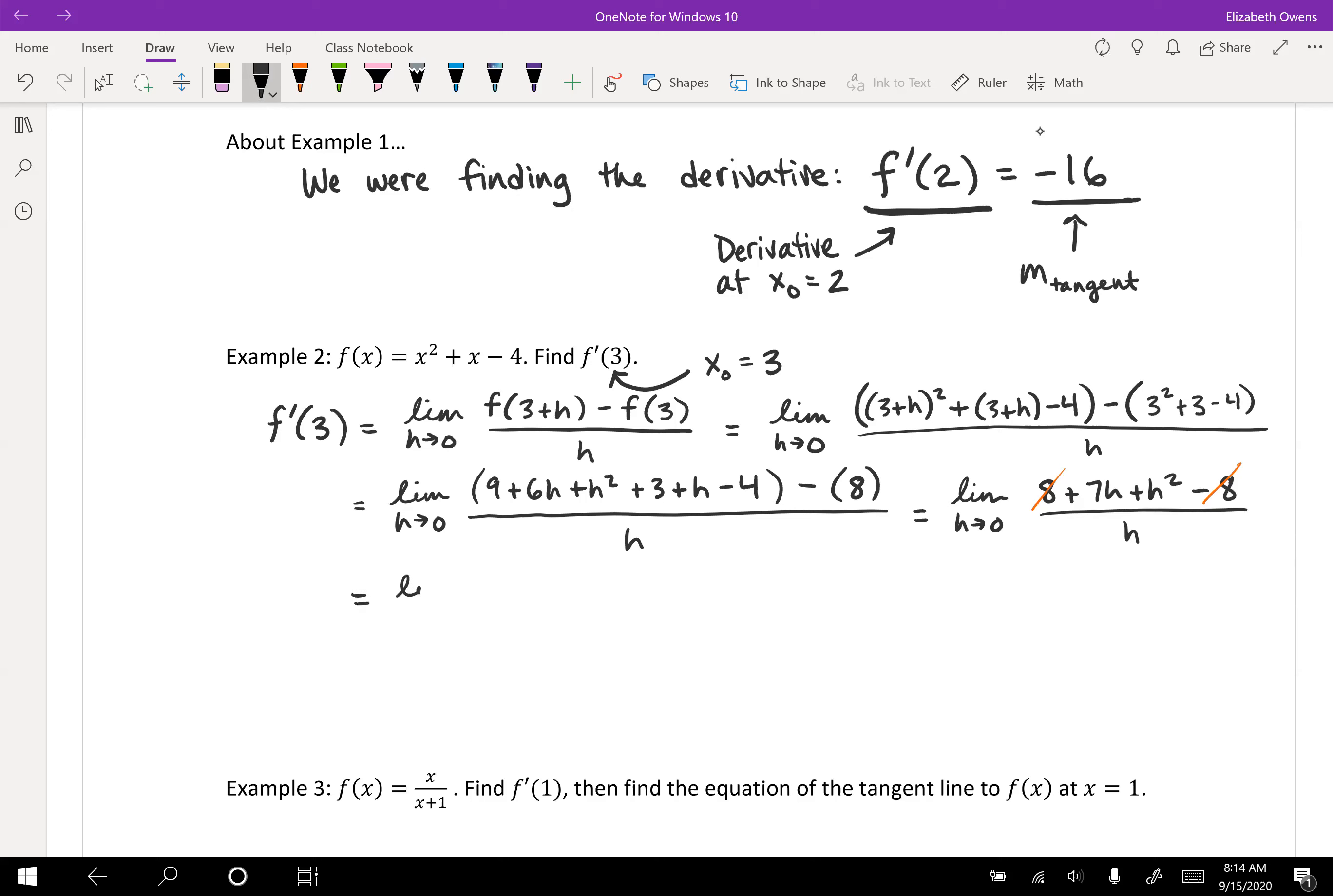So we've got our limit, h approaches 0, and we have 7h plus h squared over h. Which, you know, we can factor and cancel there. Take out an h. That way we can cancel it. So nice. That sign that we're on the right track. So we've got a limit as h approaches 0 of just 7 plus h.